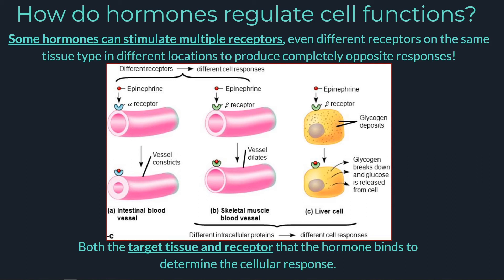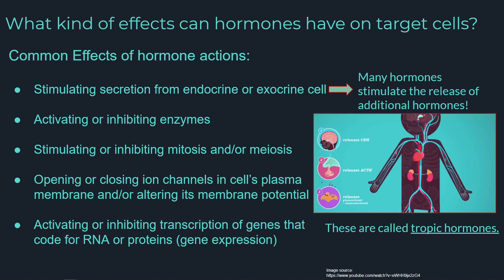Releasing epinephrine and transporting it near alpha receptors in our intestines would reduce blood flow to digestion, while transporting it near beta receptors in our skeletal muscle would increase blood flow to the muscles to enable our fight or flight response. So, hormones get released, they travel through the blood, bind to receptors on cells along the way, and trigger cellular responses.